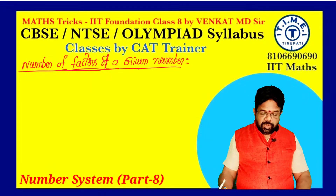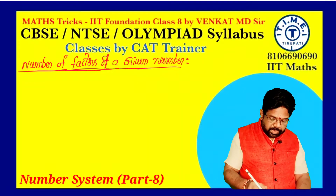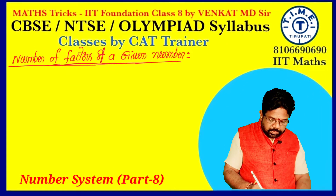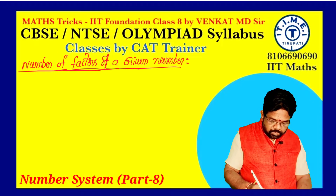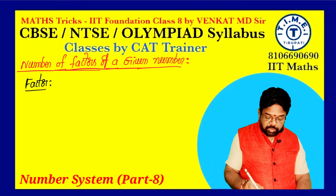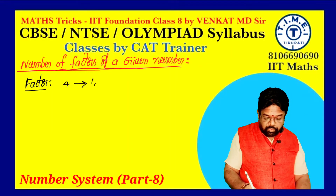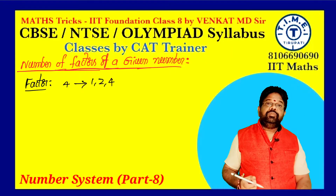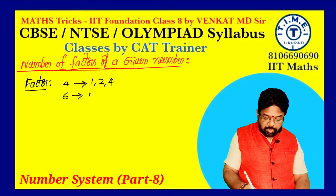First, I will discuss what is meant by a factor. Factor means: a number is exactly divisible by which numbers? Suppose 4 — 4 is exactly divisible by 1, 2, and 4. Suppose 6 — 6 is exactly divisible by 1, 2, 3, and 6.